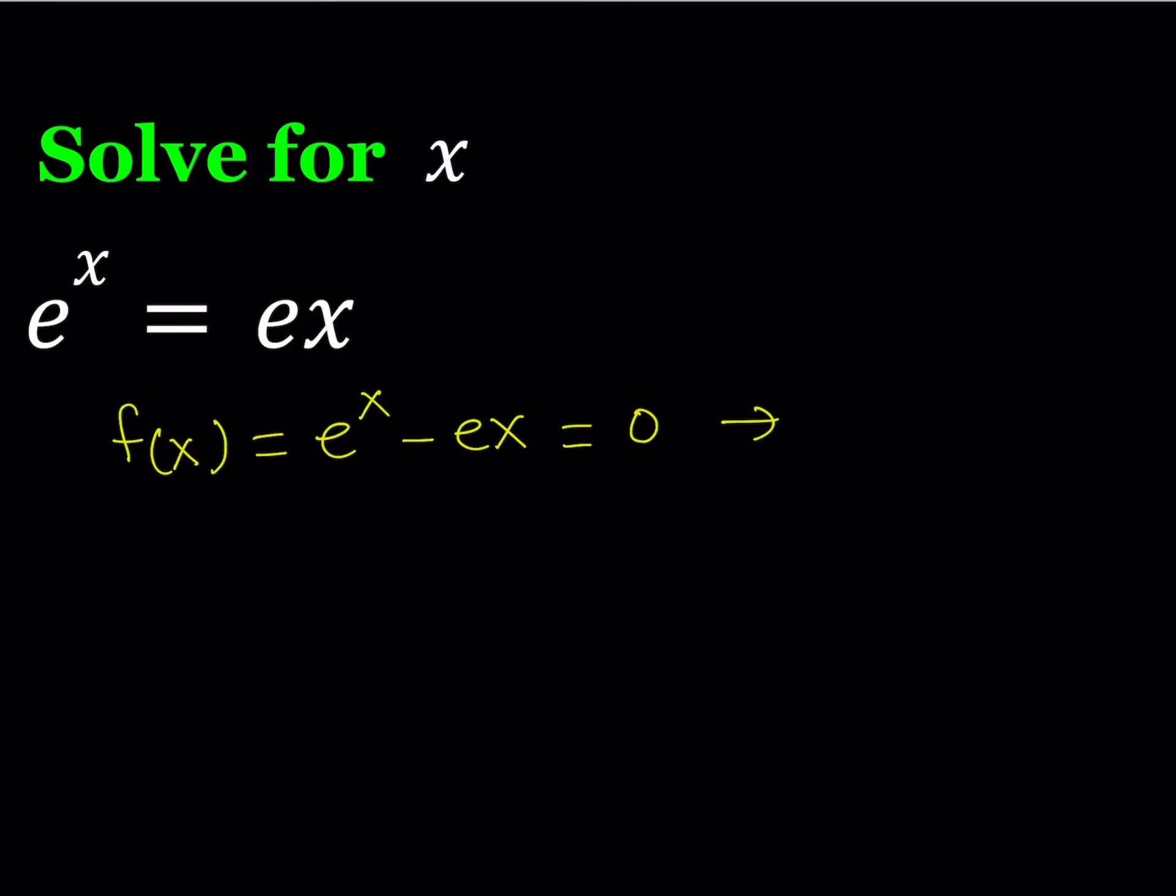Now as you know, you might have already guessed it, x equals 1 is a possible solution to this equation. Why? Because if you replace x with 1, we notice that f(1) is equal to 0.